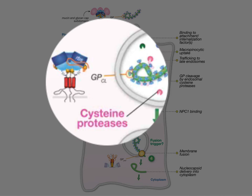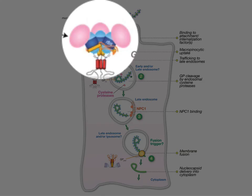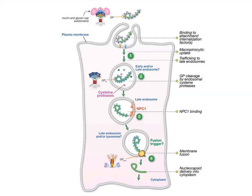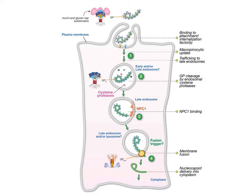The first thing that happens is the glycoprotein of the virus gets cleaved by a cysteine protease that's in the lumen of the endosome. This removes this pink cap from the viral glycoprotein, and that presumably makes it competent for the subsequent fusion reaction. Because if you don't cleave this glycoprotein, the virus cannot get into the cell.